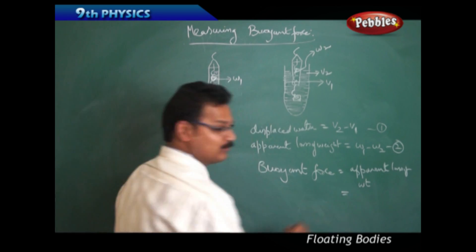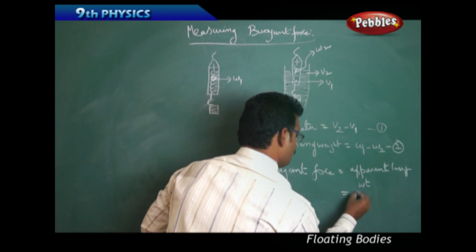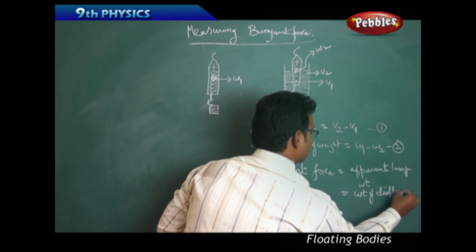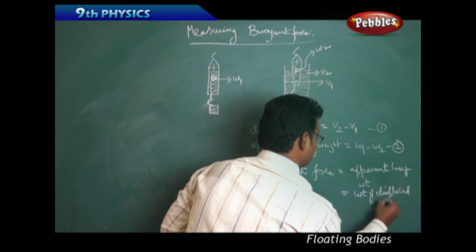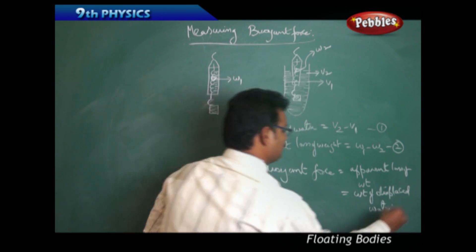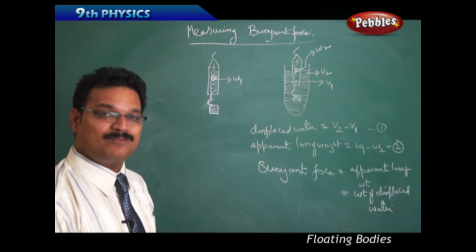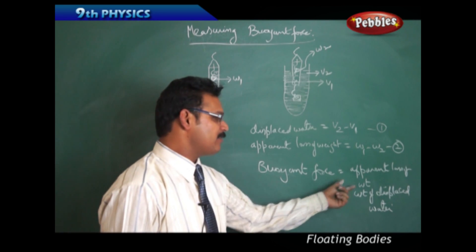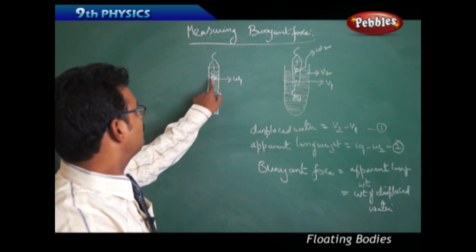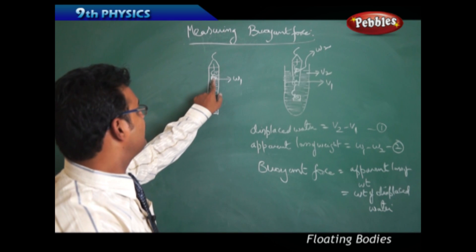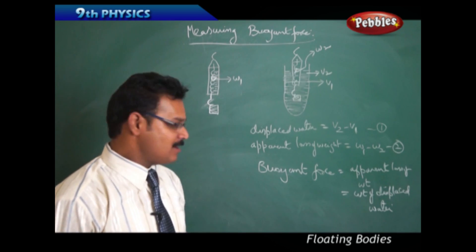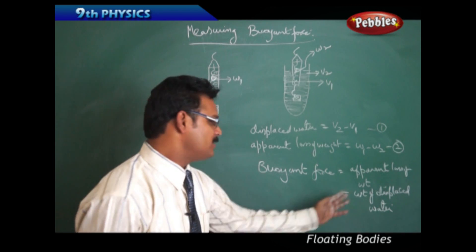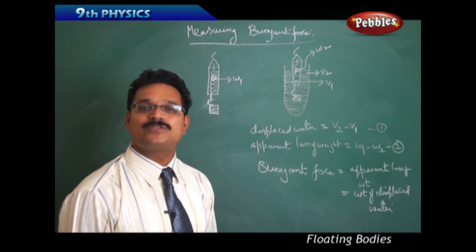The buoyant force is also equal to the weight of the displaced water. So to find buoyant force, you don't need new instruments — either find the apparent loss of weight from the spring balance readings, or observe the change in volume in the measuring cylinder. Both methods give you the buoyant force.